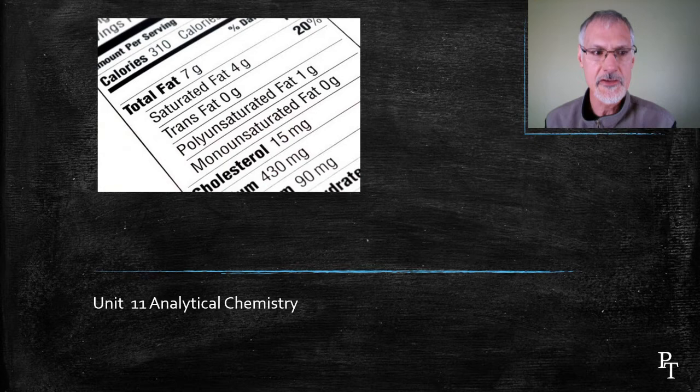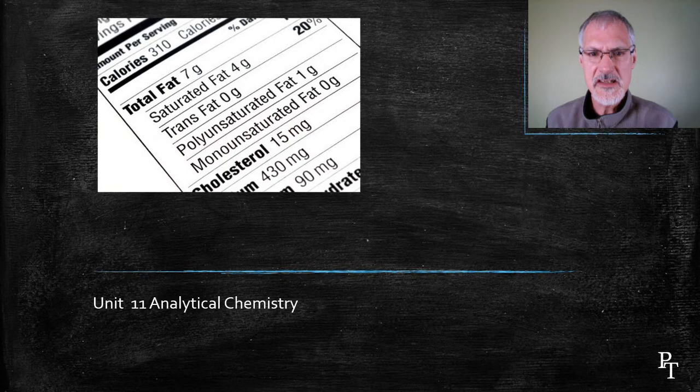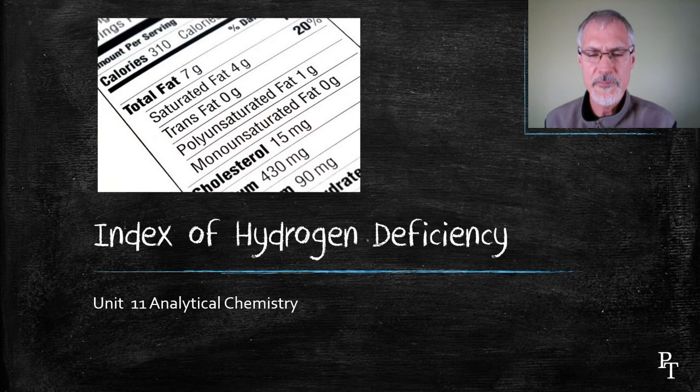Ever look more carefully at that bag of chips you might be having? On the food label on the side, you'll see the words saturated, polyunsaturated, monounsaturated. Today's lesson has something to do with that, and it's called the index of hydrogen deficiency.